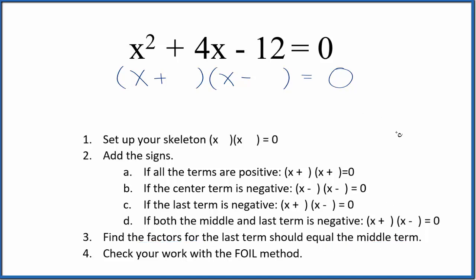The last term is negative 12. Let's just work with 12. We could have 1 times 12, we could have 2 times 6, or we could have 3 times 4. Those are the factors.